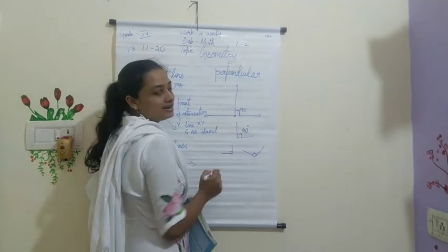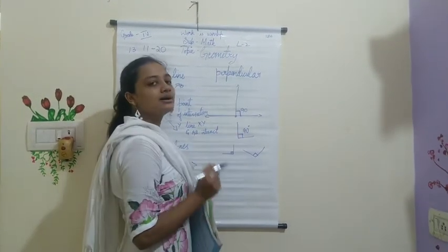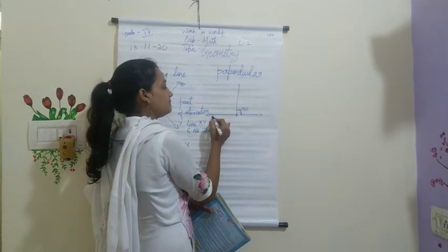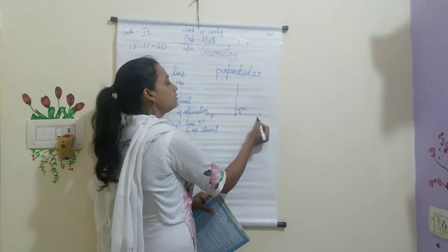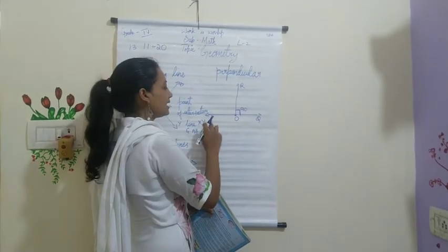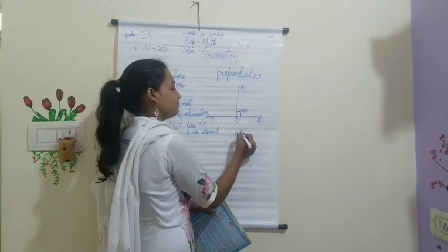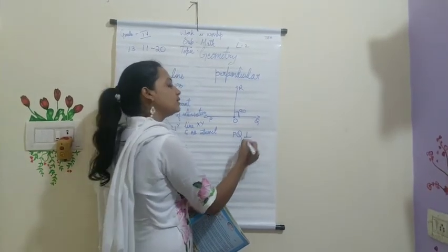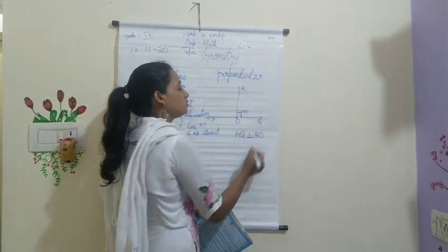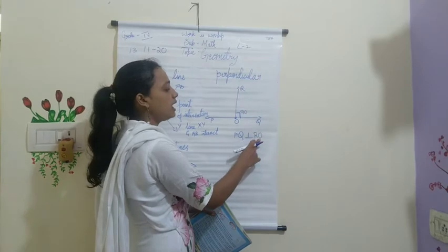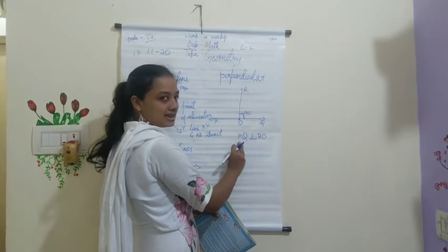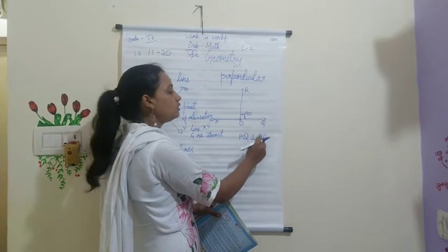Any line having a 90-degree angle is called a perpendicular line. To write the name, I label the lines as P, Q and R, O. So I write: line PQ is perpendicular — using the perpendicular symbol — to line RO. You don't need to mention whether it is a line, line segment, or anything else; just write the letters. Line PQ is perpendicular to line RO — this is how you write perpendicular lines.